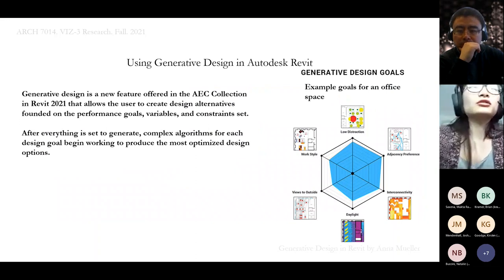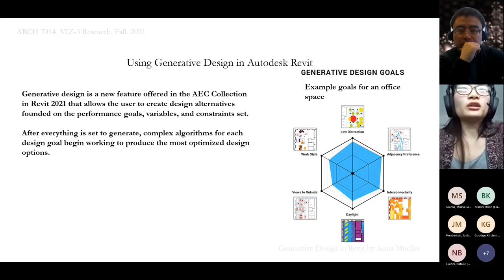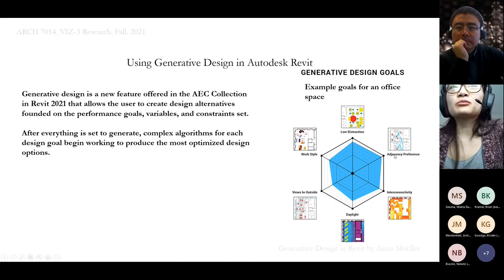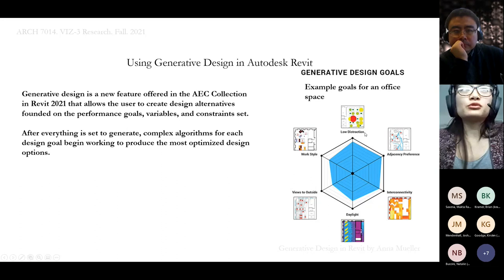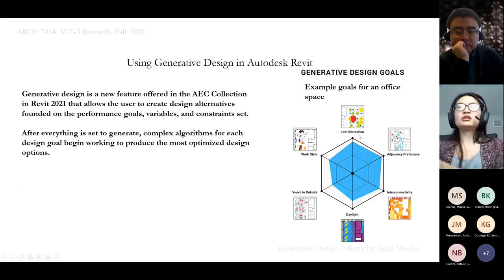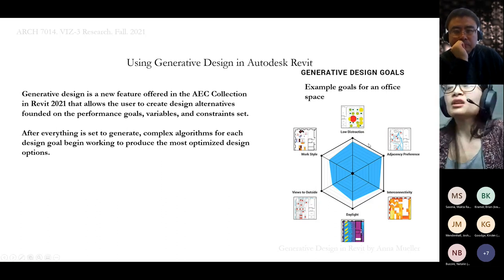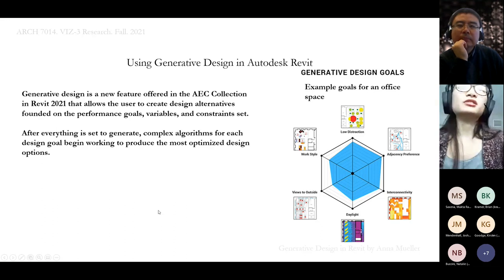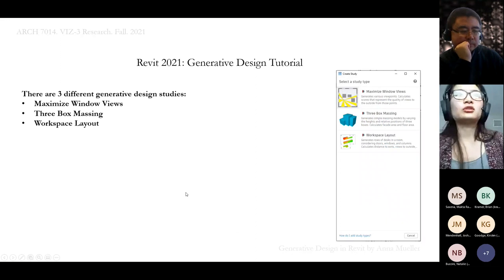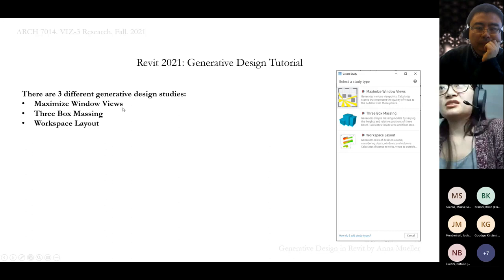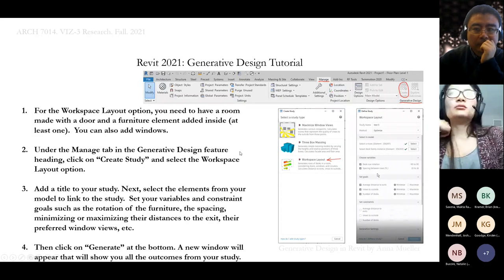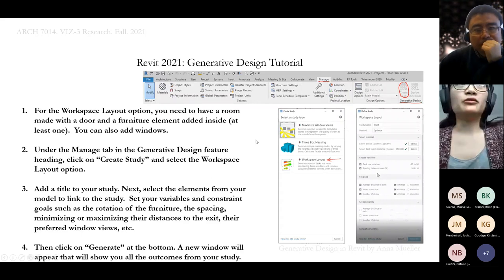Using generative design in Revit: it's a new feature added in the AEC Collection in Revit 2021, and Revit 2022 also includes it. It's not as comprehensive as other generative design programs, but it can do the job for quickly figuring out room layouts, massing, and window views. It covers goals like low distraction, adjacency preference, interconnectivity, daylight, outside views, and work style — all for a workspace, for example.